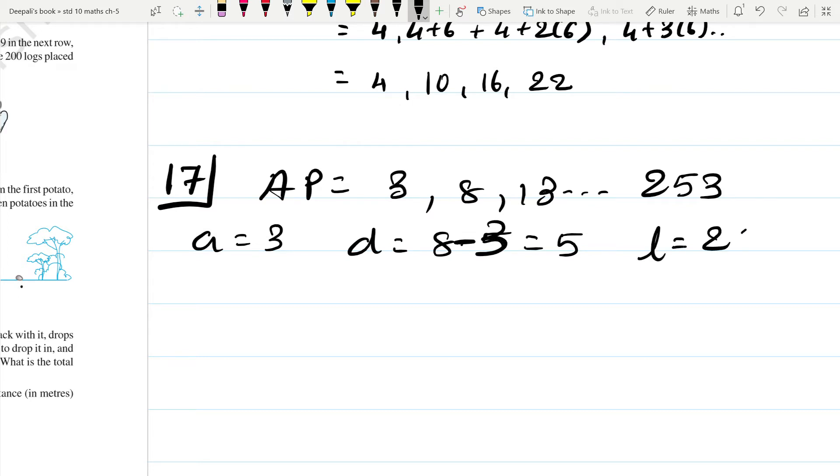And L is 253. So again L is AN. Therefore L is equal to A plus N minus 1D.